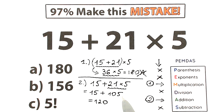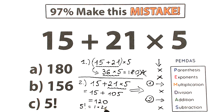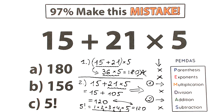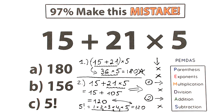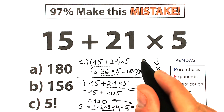What about Option B — 156? That is neither 180 nor 120, so it's also incorrect. The correct answer is 120, solved according to the proper order of operations. And Option C is 5 factorial. Remember from school: 5 factorial equals 1 times 2 times 3 times 4 times 5. That gives us 2, then times 3 is 6, times 4 is 24, times 5 is 120. So 5 factorial equals 120, which is the same as our correct answer. The correct answer according to PEMDAS is 120, and the correct option is Option C.